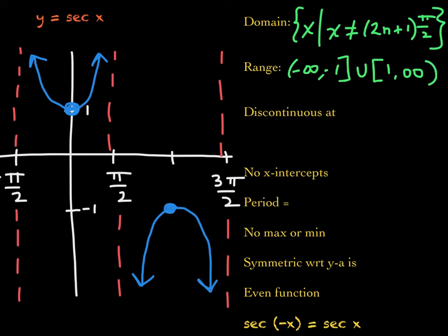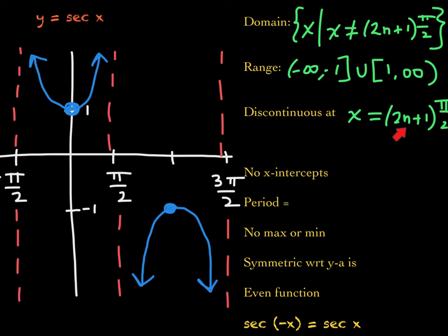This function is discontinuous at x values equal to any odd multiple of pi over 2. So all vertical asymptotes have equations of that form. Notice that the graph never touches the x-axis, so there are no x-intercepts. Notice also that the period is 2 pi — you get one complete upward opening branch and one complete downward opening branch from negative pi over 2 to 3 pi over 2, and that distance is 2 pi.